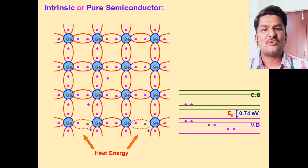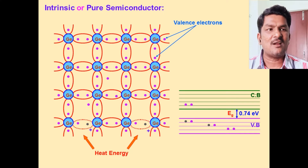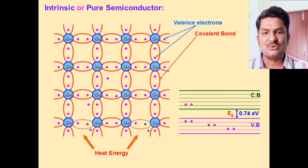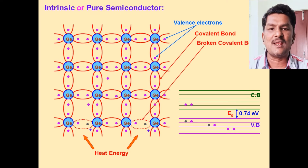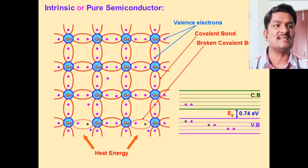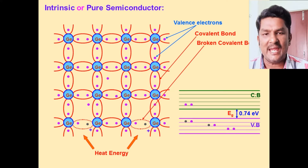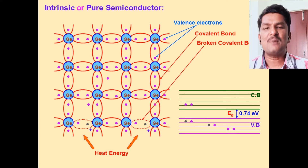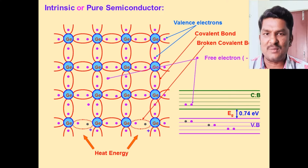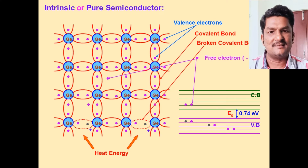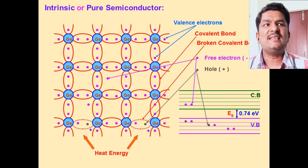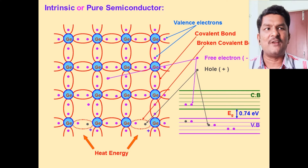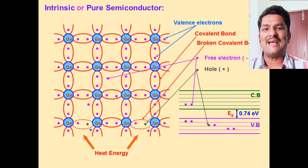When some amount of energy is given, electrons can jump from the valence band to the conduction band, so the number of free electrons available in the conduction band increases. Because there is a small gap, more electrons are able to jump. The diagram indicates free electrons, holes, broken covalent bonds, covalent bonds, and valence electrons.